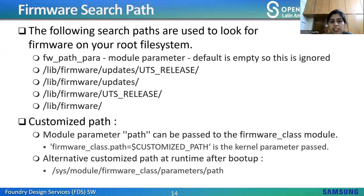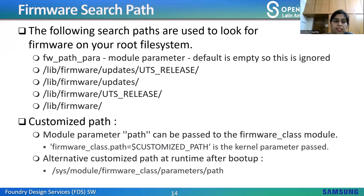The following search paths are used to look for firmware on the root filesystem: firmware_path_para (a module parameter, default empty, normally ignored), then lib/firmware/updates/UTS_RELEASE, lib/firmware/updates, lib/firmware, and so on. The module parameter path can be passed to the firmware class module to activate the optional custom firmware path. This custom path can be up to 256 characters long and can also be set at runtime via /sys/module/firmware_class/parameters/path by echoing your custom path.